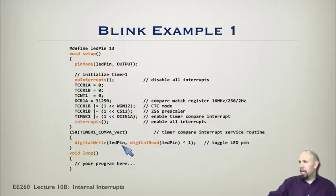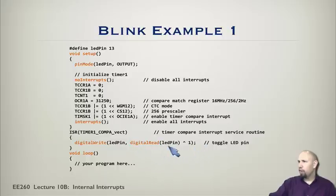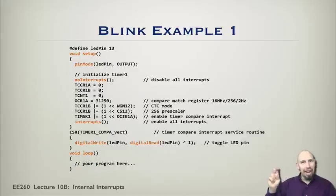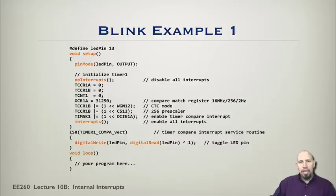In the interrupt service routine, we do a digital write to LED pin 13, exclusive-ORing its current value with 1 — which toggles it. Notice that in the main loop there is nothing; the blink is happening entirely in the background. The program can be blinking on its own while you do something completely different in the loop. This is a blink program using timer counter compare output compare to trigger the ISR that toggles the LED.